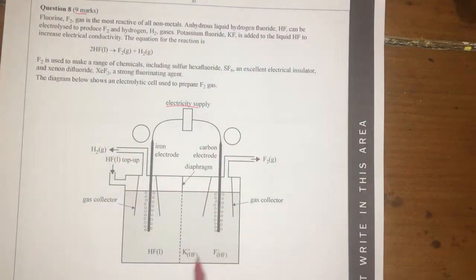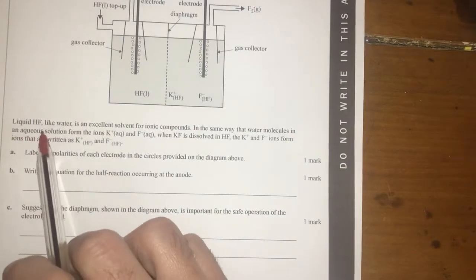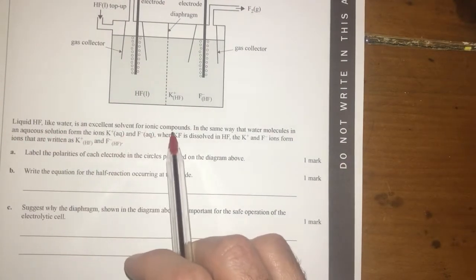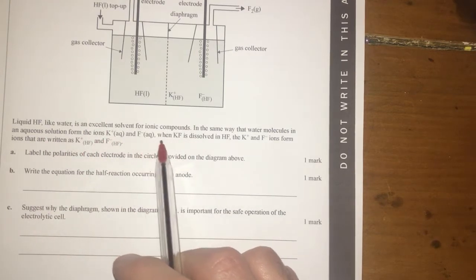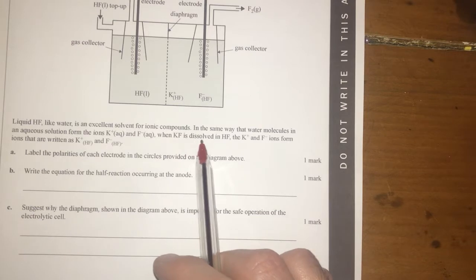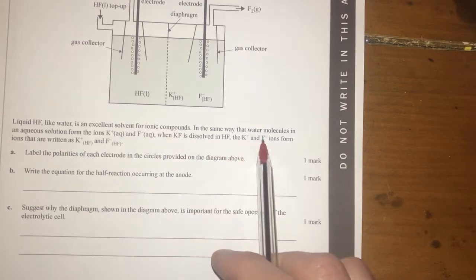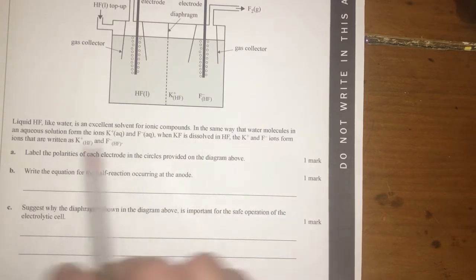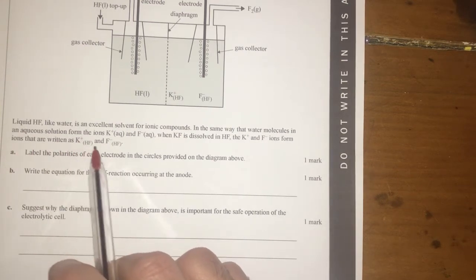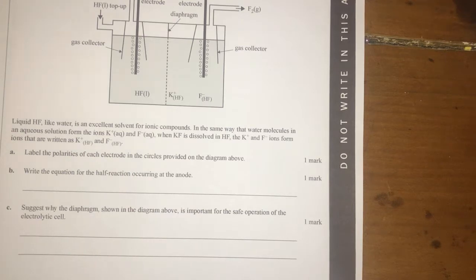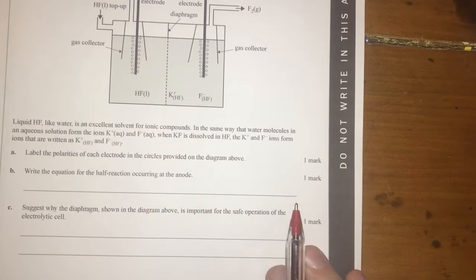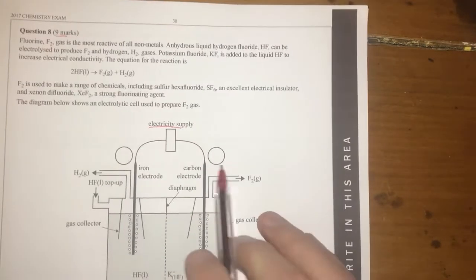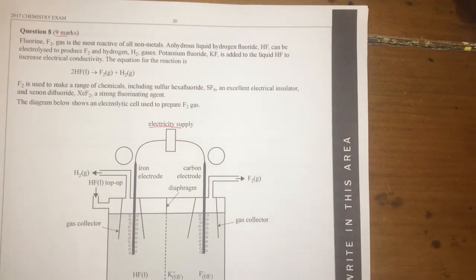The diagram below shows that liquid HF like water is actually a solvent for ionic compounds in the same way that water molecules in aqueous solutions form K+ and F- aqueous, then this will dissolve in HF to form K+ and F- fluoride ions which are written as K+(HF) and F-(HF) as well. First question then, label polarities of each electrode in the circles above on the diagram. So we need to know which one is positive and negative. How am I going to work that out from this?